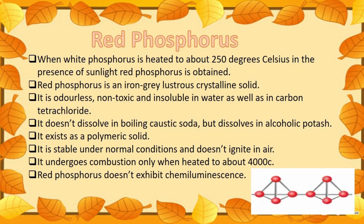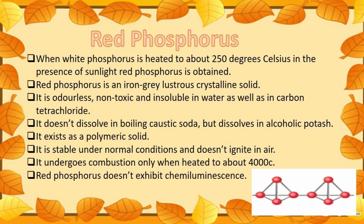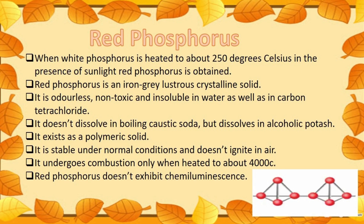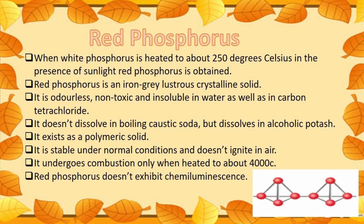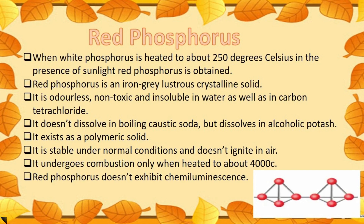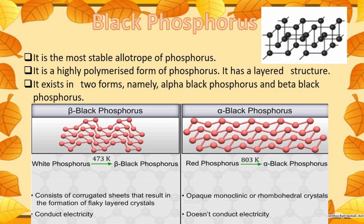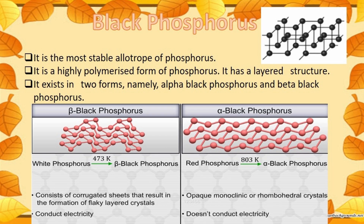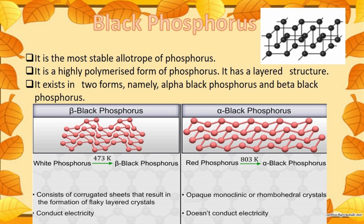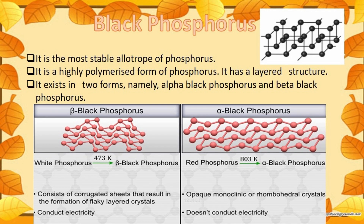Red phosphorus is stable under normal conditions and does not ignite in air. It undergoes combustion only when heated to about 400 degrees Celsius. Red phosphorus does not exhibit chemiluminescence.